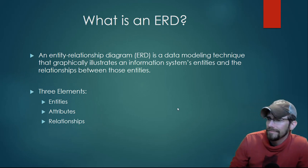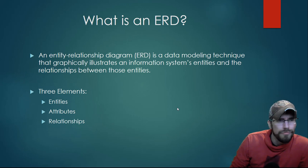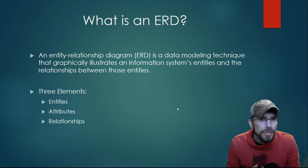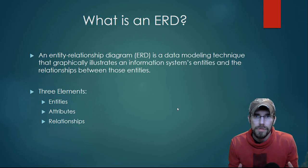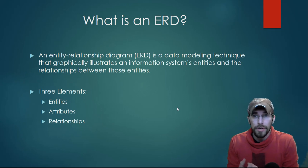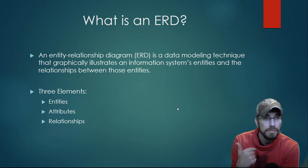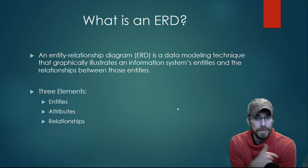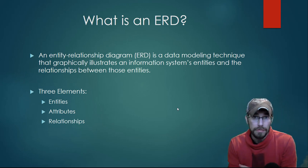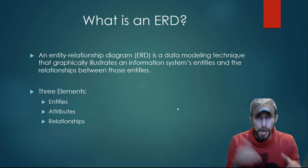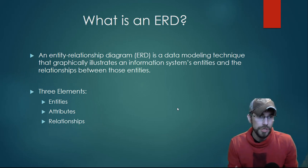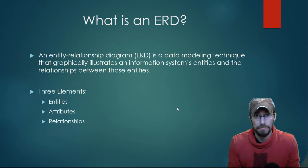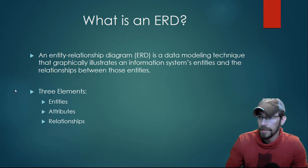So what's an ERD? It's basically just a visual representation of how a database is structured. It takes an information system's components and shows how they relate to one another. An ERD has three elements: entities, attributes, and relationships. The entities are what you're tracking. The attributes are the details about those entities that you're keeping track of, and the relationships are how those entities relate. It's as simple as that.